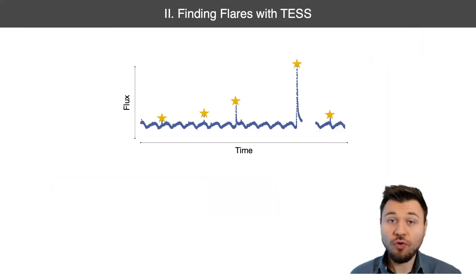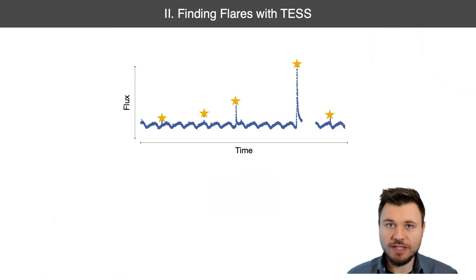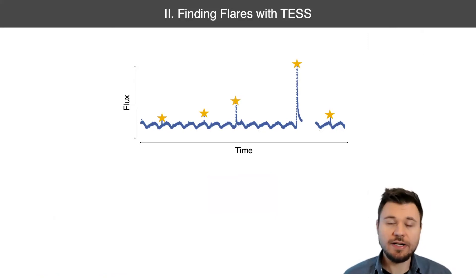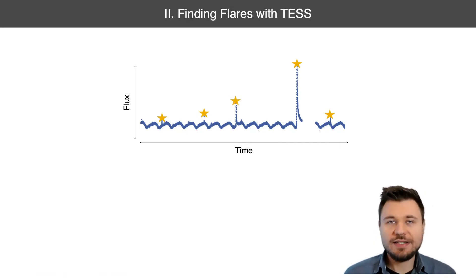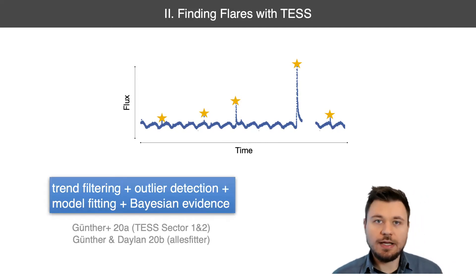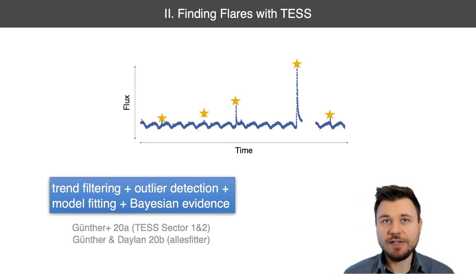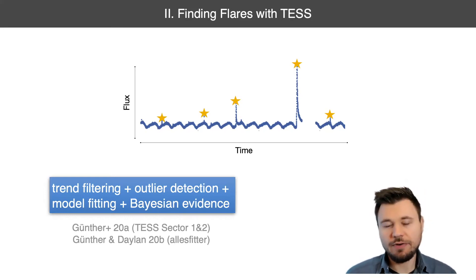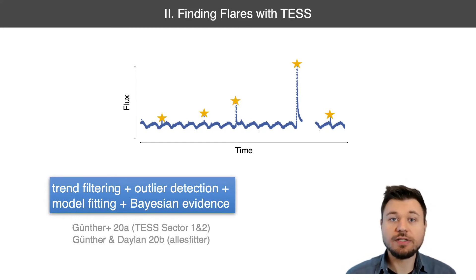If we look at a full light curve with multiple flaring events, this is typically what we see: a lot of rotational modulation because these flaring stars often have many star spots. The golden stars mark the peaks of a few flares. In our previous study, we used more classical methods such as trend filtering, outlier detection, model fitting, and Bayesian evidence to compare different model fits and determine how many flares are in the data set.